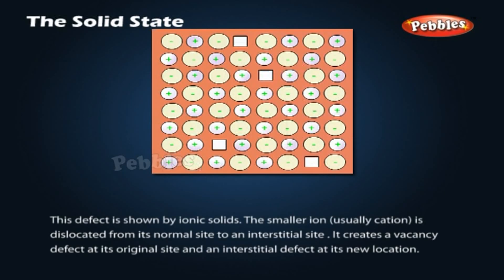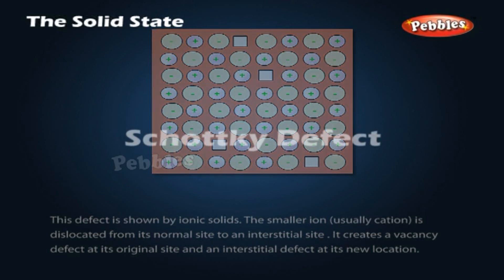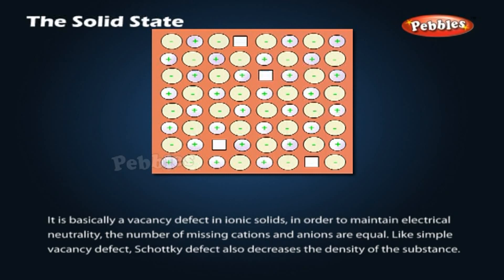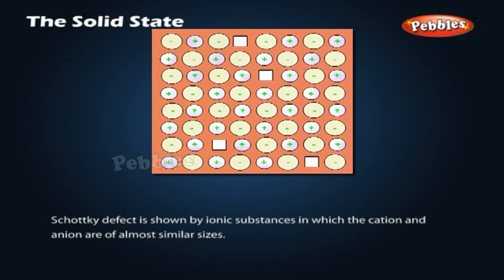Frenkel defect is shown by ionic solids. The smaller ion is dislocated from its normal site to an interstitial site, creating a vacancy defect at its original site and an interstitial defect at its new location. Schottky defect is basically a vacancy defect in ionic solids. To maintain electrical neutrality, the number of missing cations and anions are equal. Like vacancy defects, Schottky defects also decrease the density of the substance. Schottky defects are shown by ionic substances in which the cation and anion are of almost similar sizes.